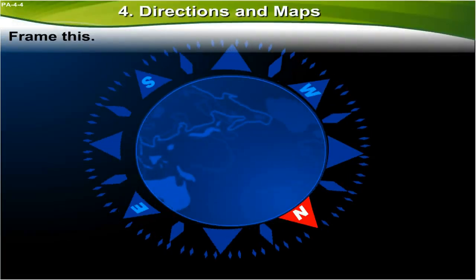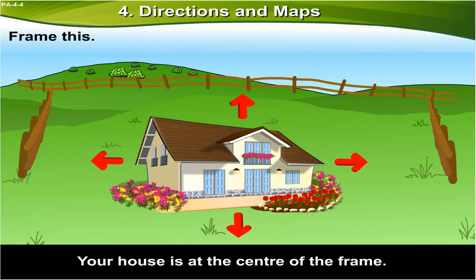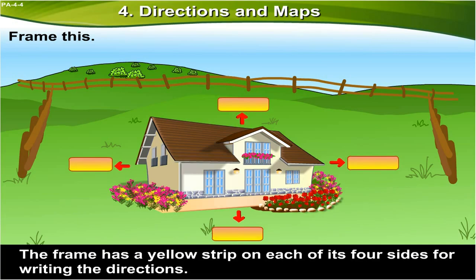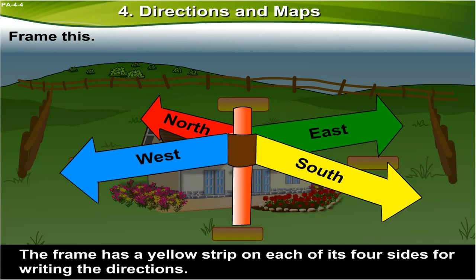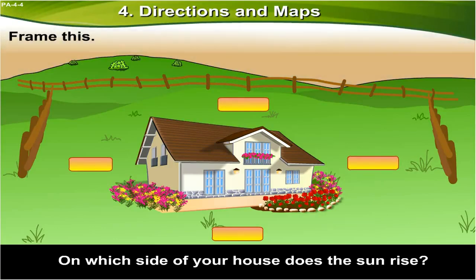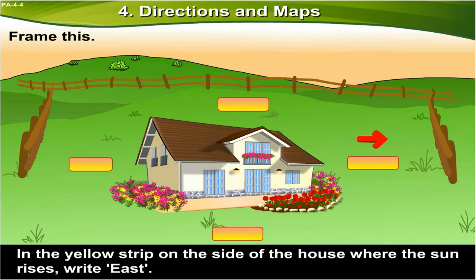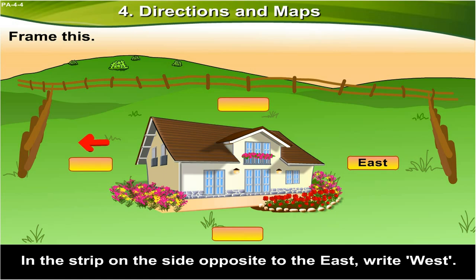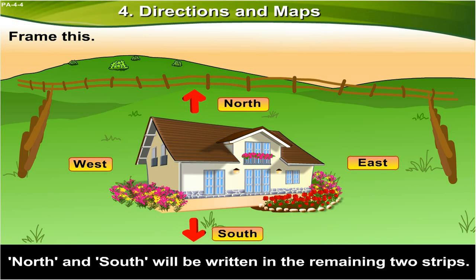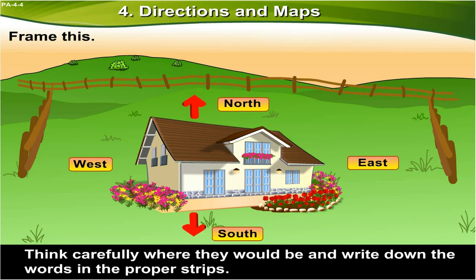Frame this. A large frame is given below. Your house is at the center of the frame. The frame has a yellow strip on each of its four sides for writing the directions. On which side of your house does the sun rise? That side is the east. In the yellow strip on the side of the house where the sun rises, write east. In the strip on the side opposite to the east, write west. North and south will be written in the remaining two strips. Think carefully where they would be and write down the words in the proper strips.